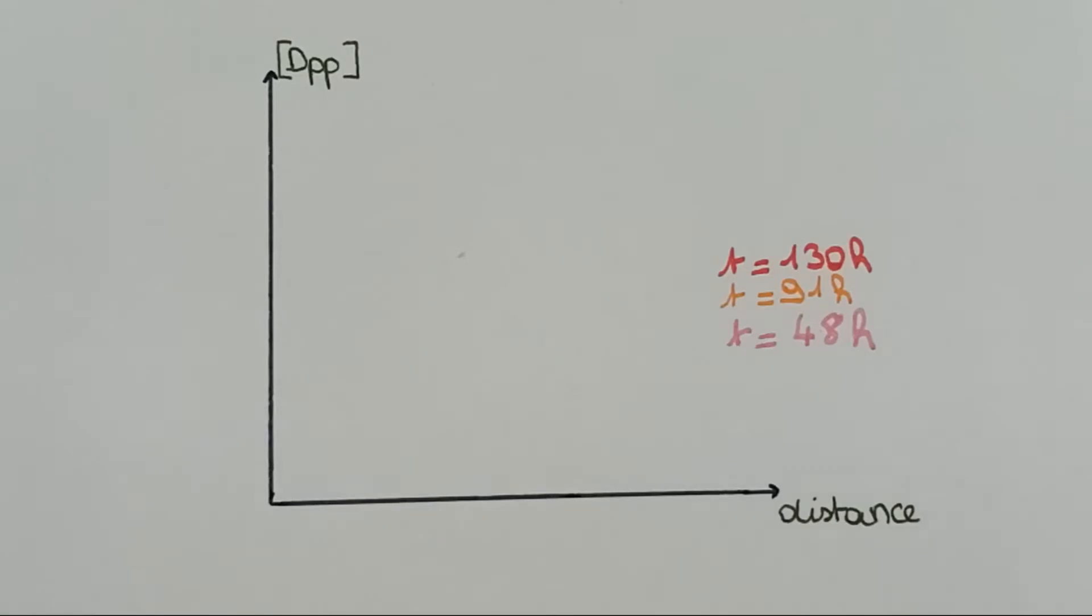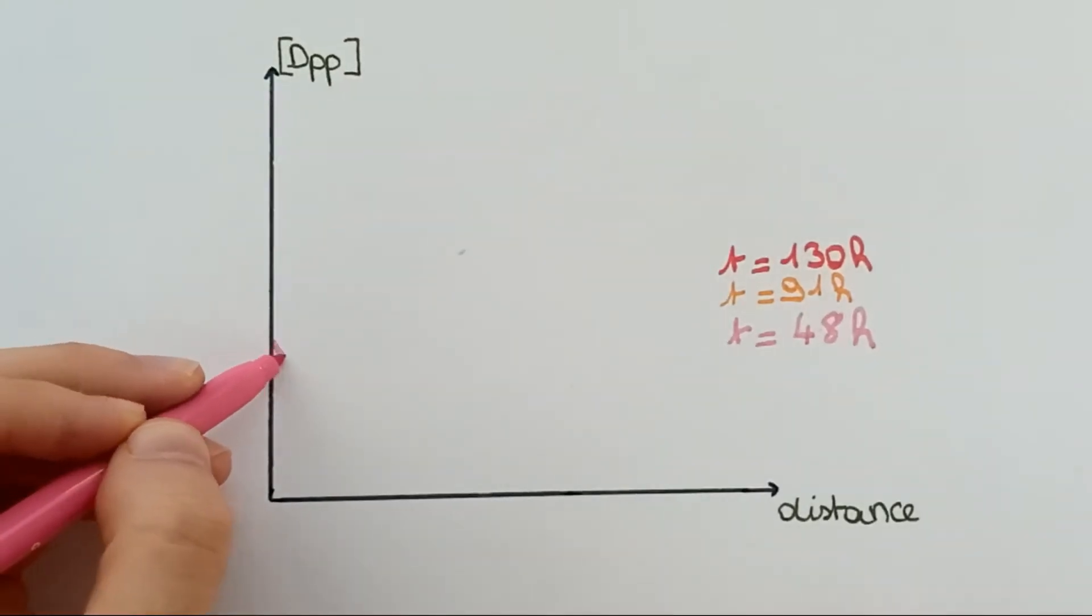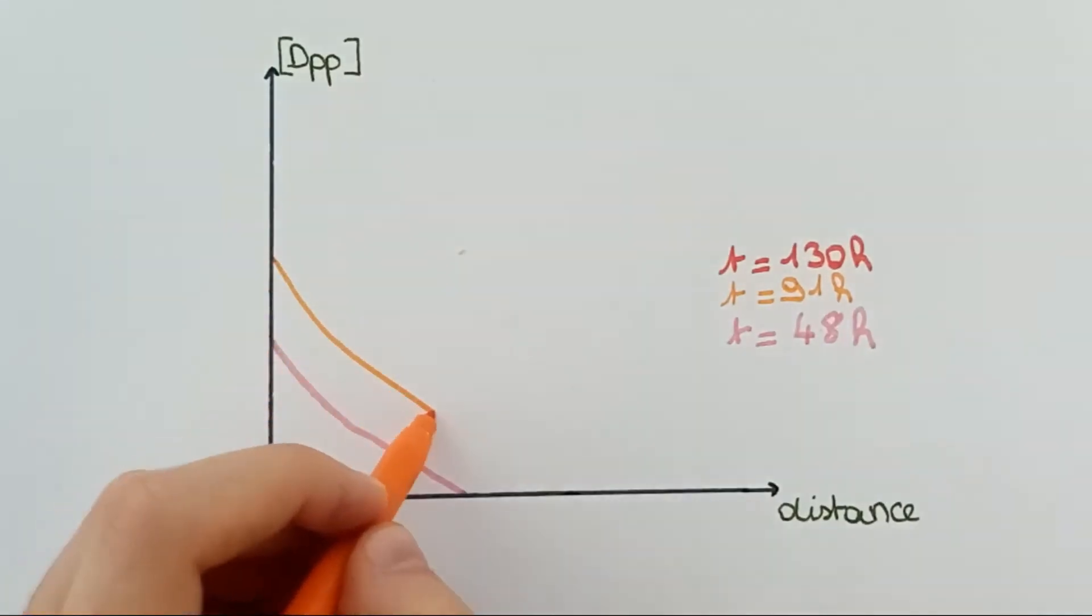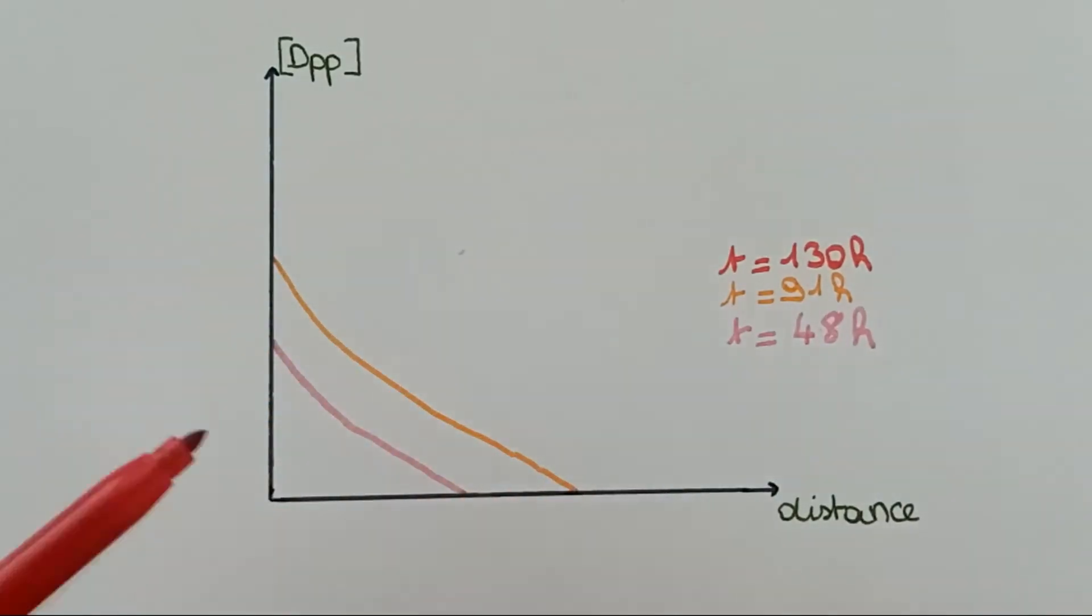Several phenomena can be observed thanks to fluorescence. First, as the disc is growing, DPP gradient gets longer and has a bigger amplitude.